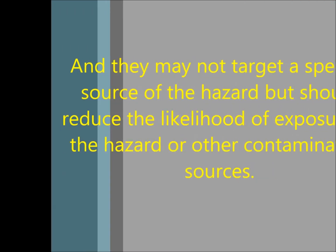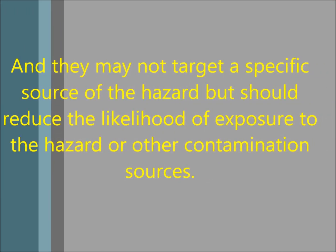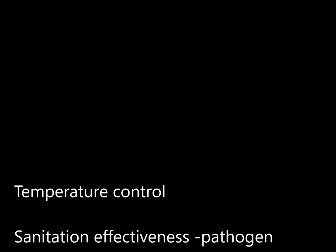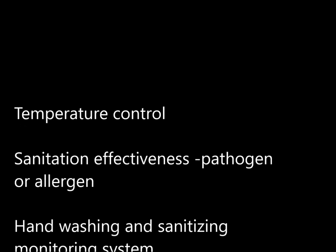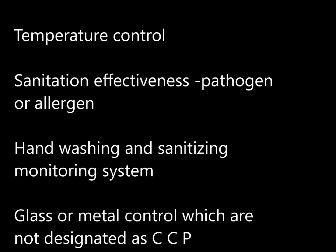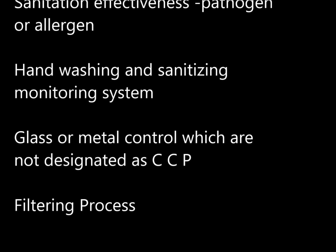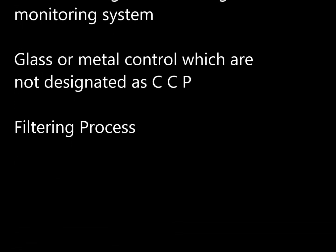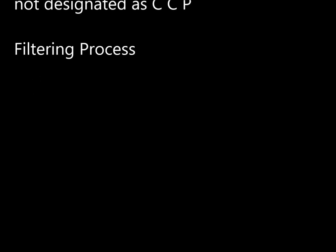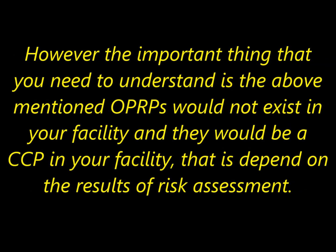OPRPs may not target a specific source of the hazard but should reduce the likelihood of exposure to the hazard or other contamination sources. Examples of OPRPs in a food manufacturing environment would be: temperature control; sanitation effectiveness for pathogens or allergens; hand washing and sanitizing monitoring systems; glass or metal control which are not designated as a CCP; and filtering processes. However, the important thing to understand is that the above-mentioned OPRPs may not exist in your facility — they could be a CCP in your facility, depending on the results of a risk assessment.